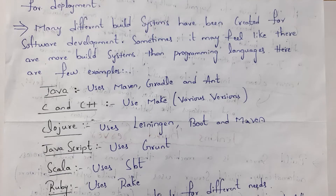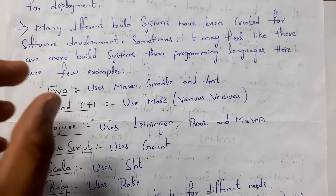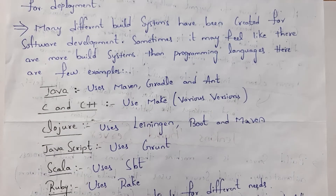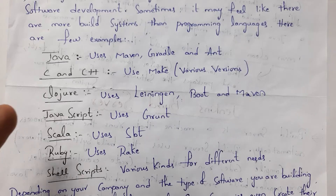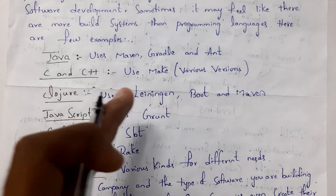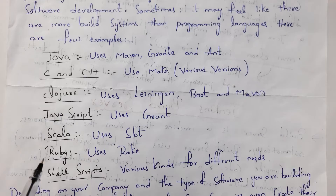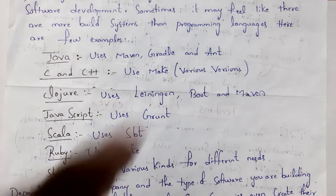There are many build systems created for software development, and sometimes you may feel there are more build systems than programming languages. For example, for Java code you can use Maven, Gradle, and Ant. For C and C++ code you can use Make. For Clojure programming you can use Leiningen, Boot, and Maven. For JavaScript you can use Grunt. For Scala you can use SBT. For Ruby you can use Rake. And for shell scripting you can use various build systems based on your needs.